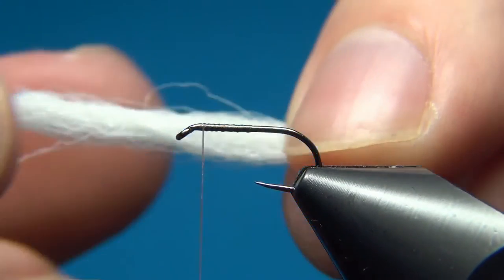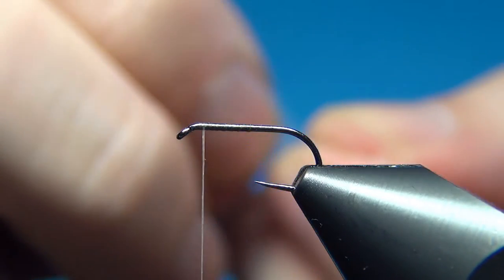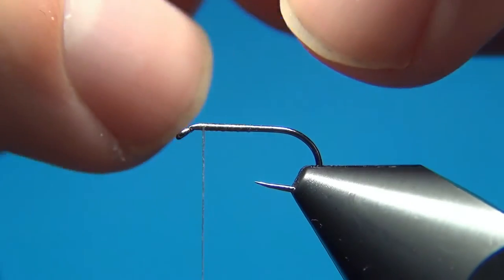And here we have material for at least 10 flies. What you do is you take just a few of these strands off. The idea is to keep this really thin.